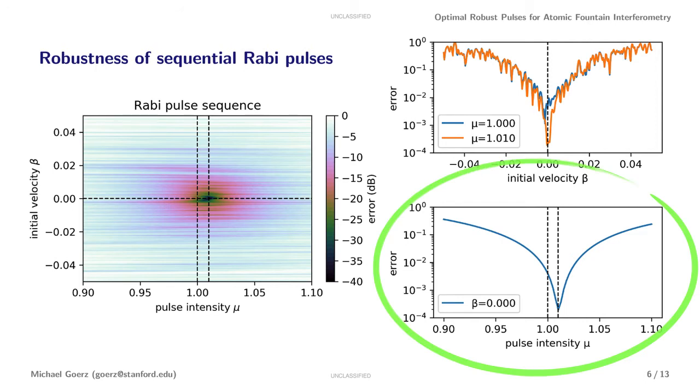We can see this here as we slice across the landscape for beta equal to 0. We also see that for variations in beta, the error is quite noisy. This is because beta leads to variations in the phase, which is on a very fast timescale.